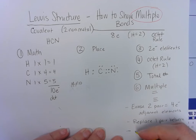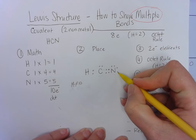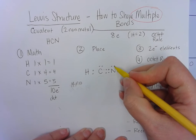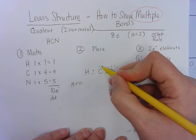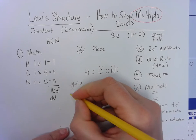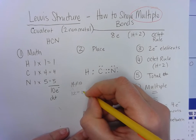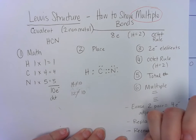Last step, we need to recount. We're going to look. Nitrogen has two, four, six, eight, ten, twelve. So this is twelve. Is twelve ten? No. We're not done.